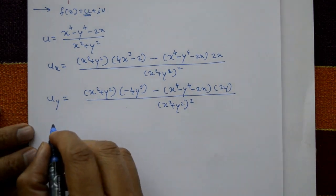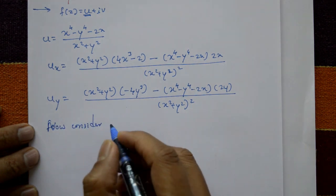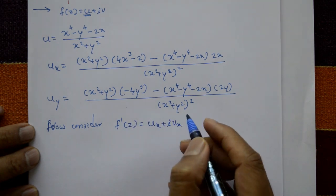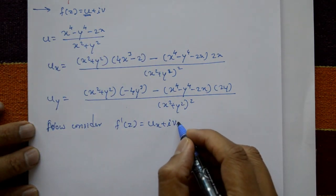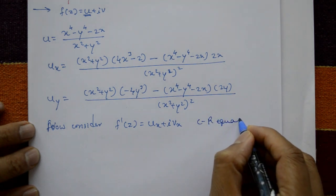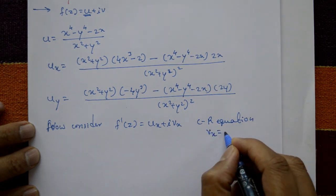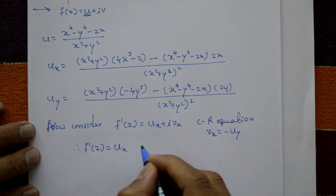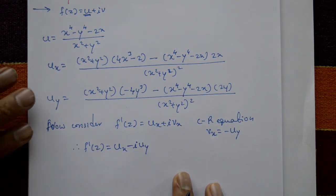Consider f'(z) = u_x + i·φ_x. Only the real part is given, so we change the imaginary part using the Cauchy-Riemann equation. Using CR equation: ∂φ/∂x = -∂u/∂y. Therefore f'(z) = u_x + i(-u_y), which means f'(z) = u_x - i·u_y.